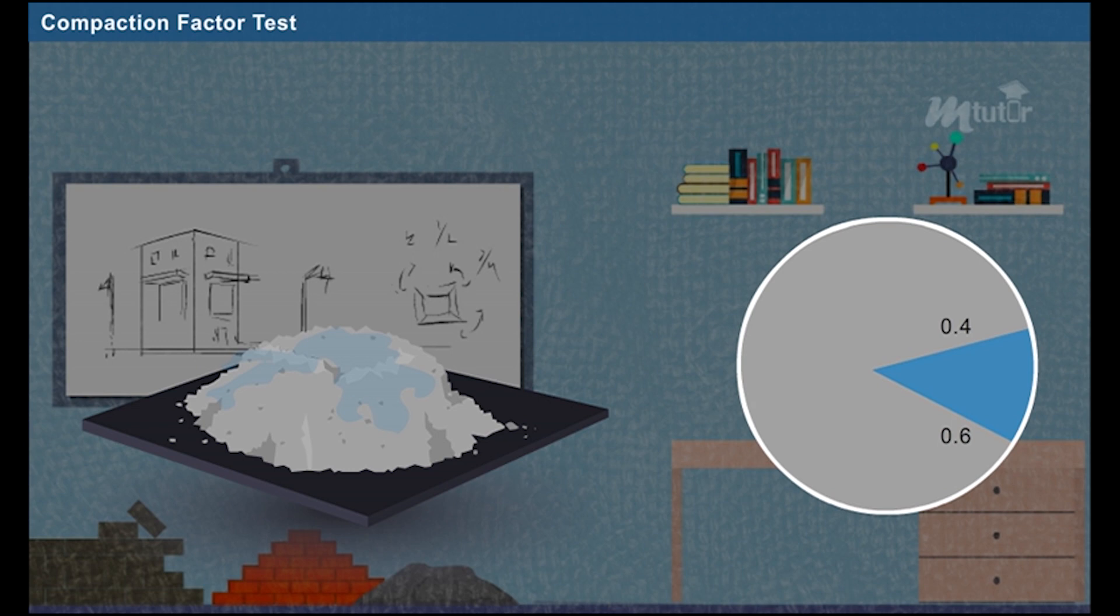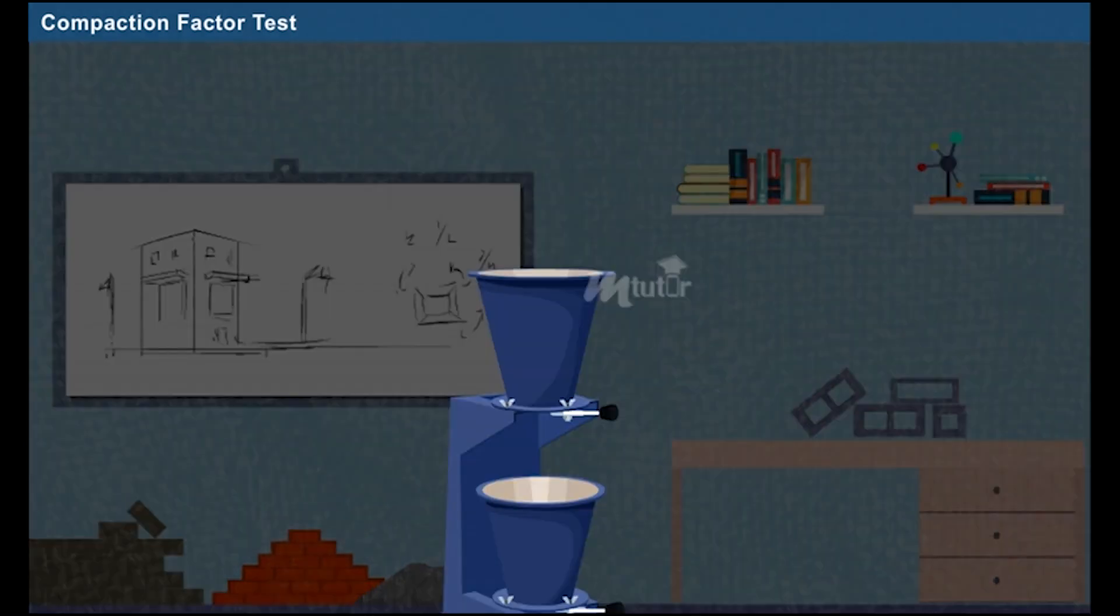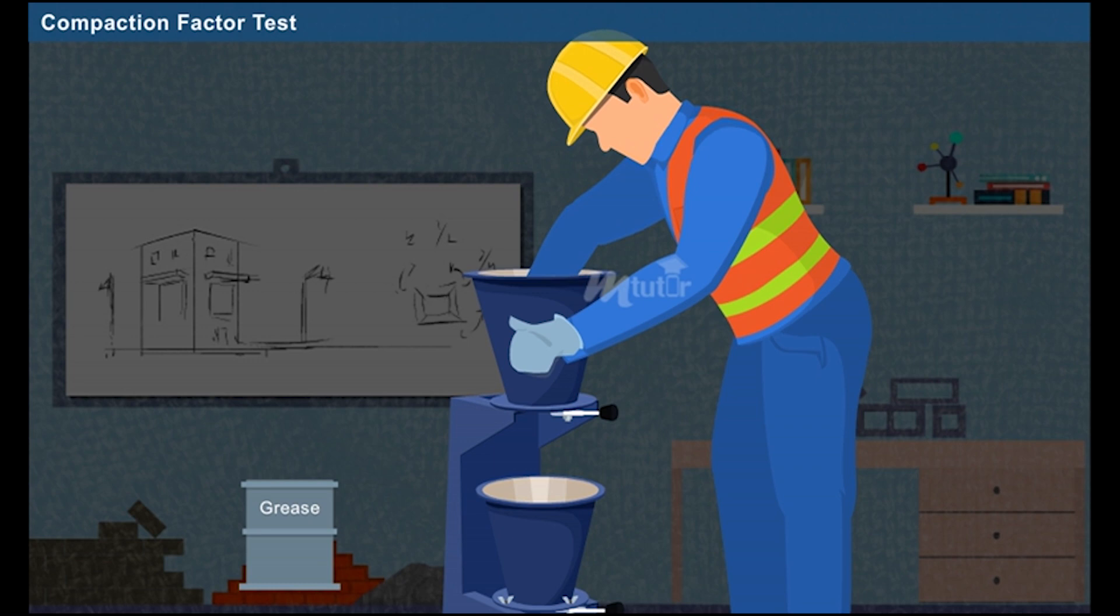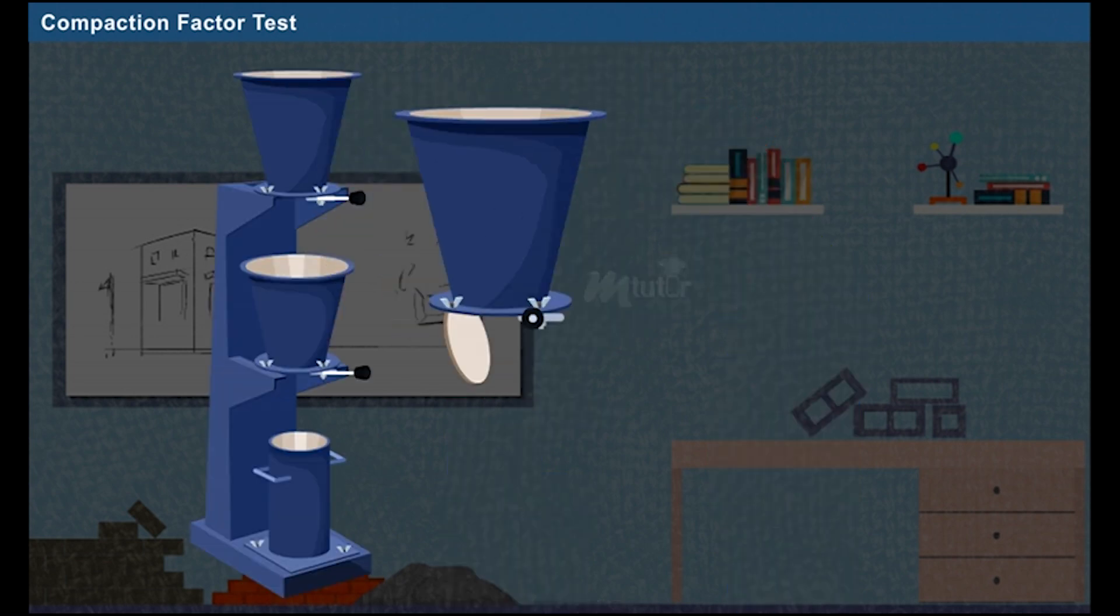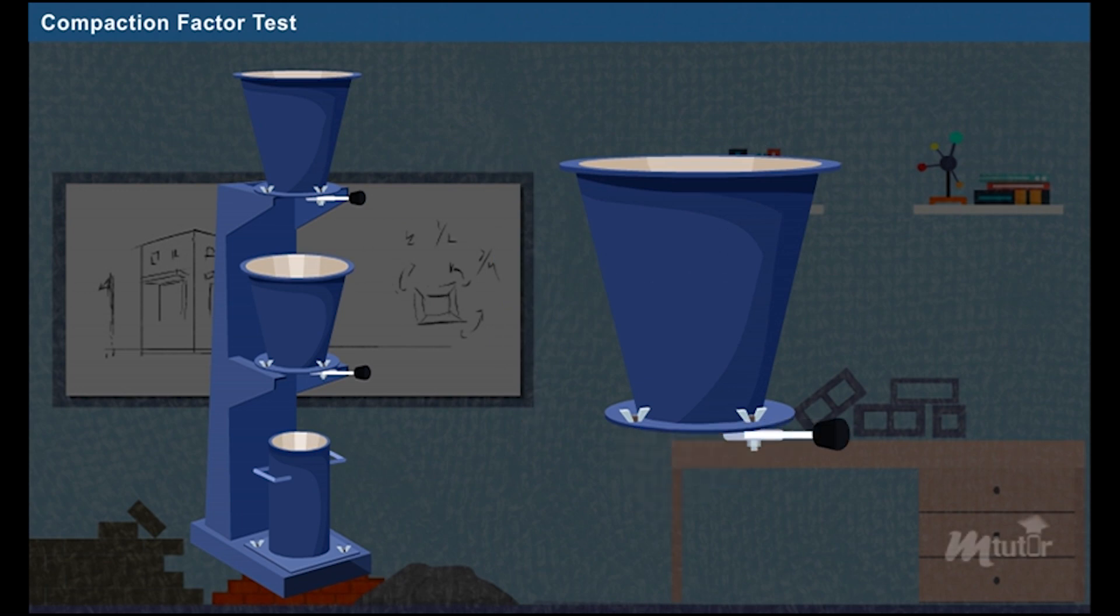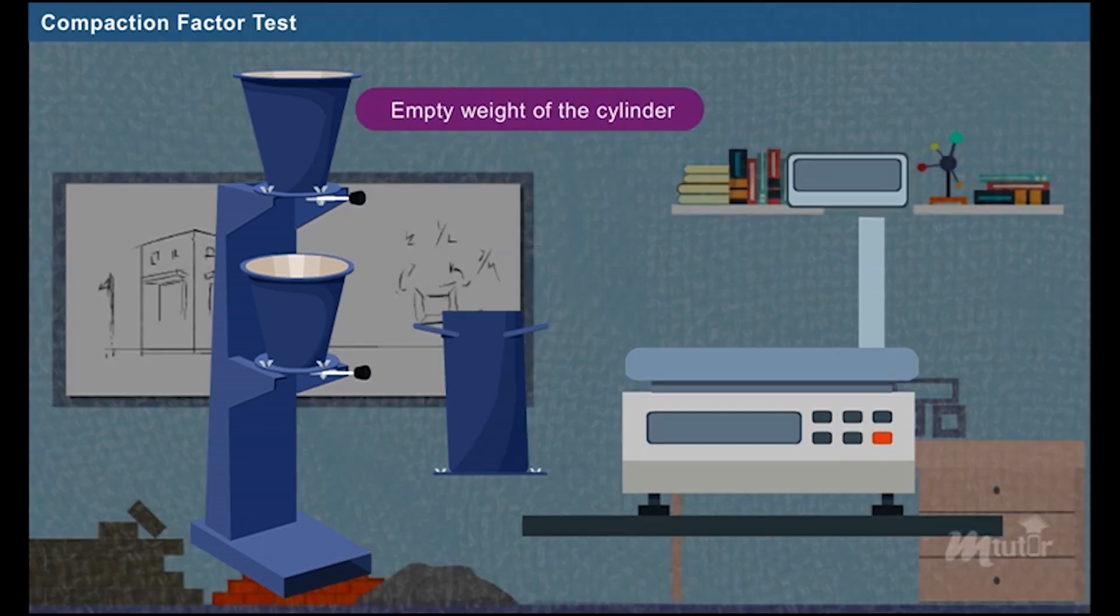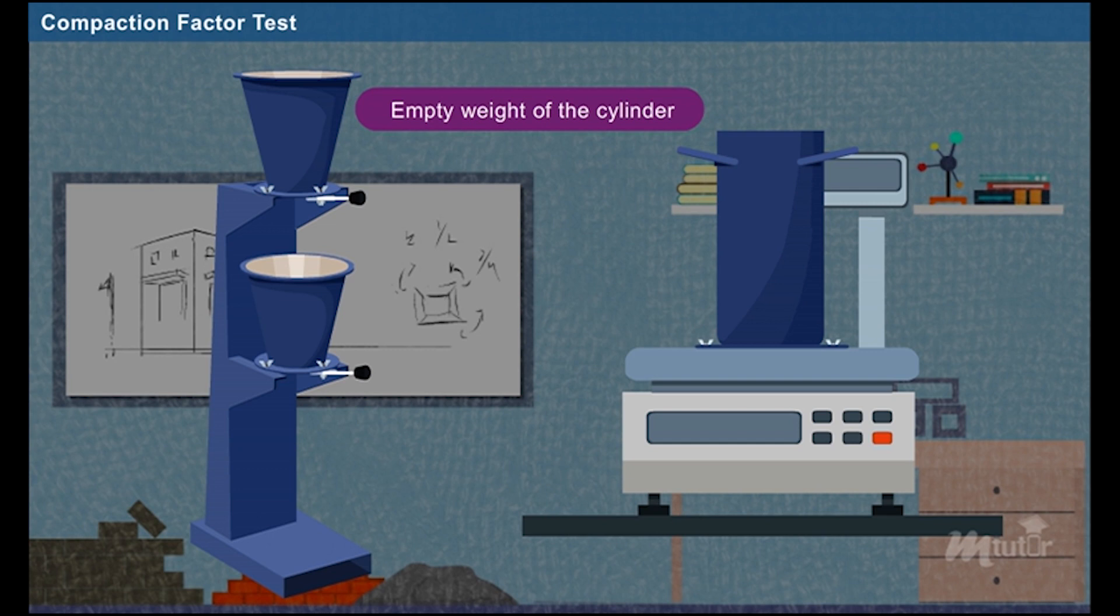Now, mix the fresh concrete. The inner surface of the hoppers and the cylinder is made free from moisture and greased. Close the trap doors of the hoppers. Then, measure the empty weight of the cylinder, i.e. W1 kilograms.